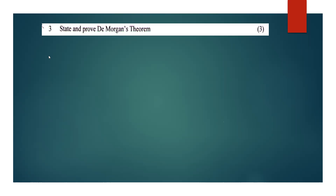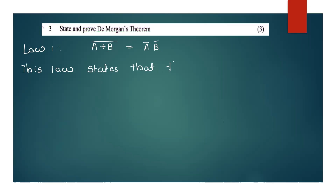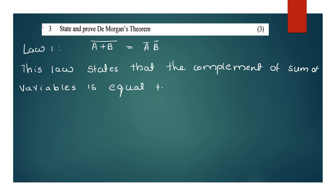State and prove De Morgan's theorem. De Morgan's theorem Law number 1: A plus B complement is equal to A complement into B complement. The first law states that the complement of the sum of variables is equal to the product of their individual complements.